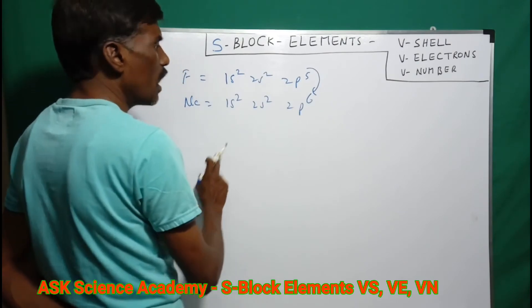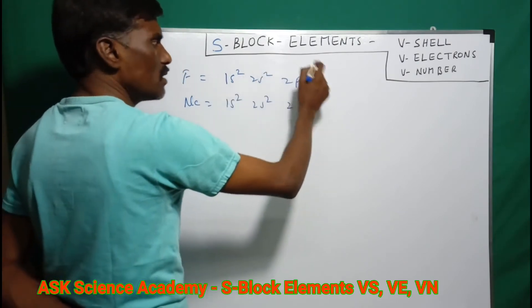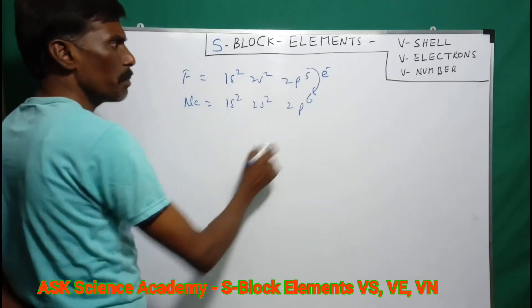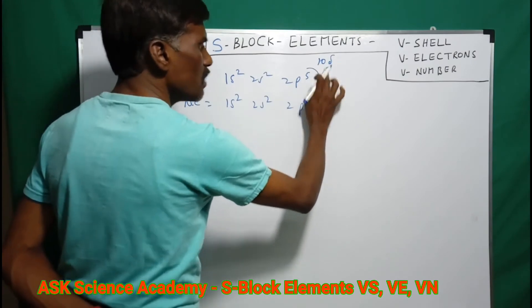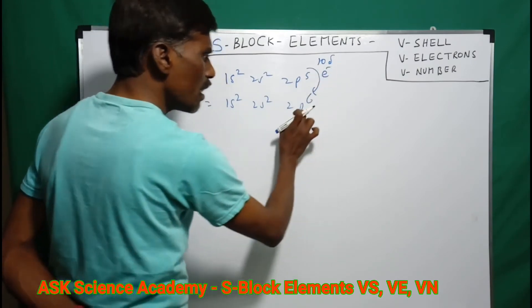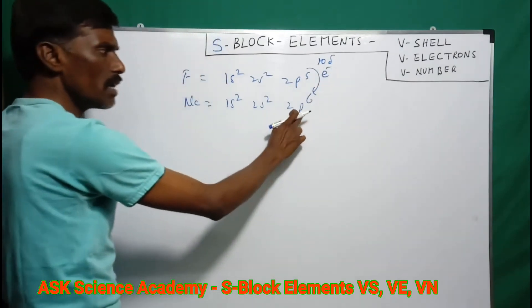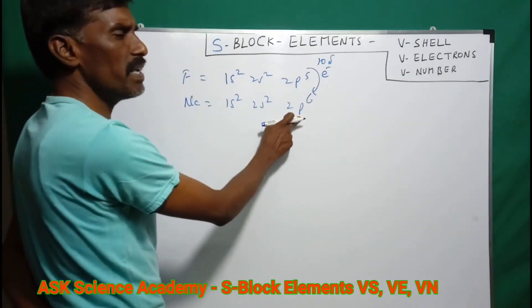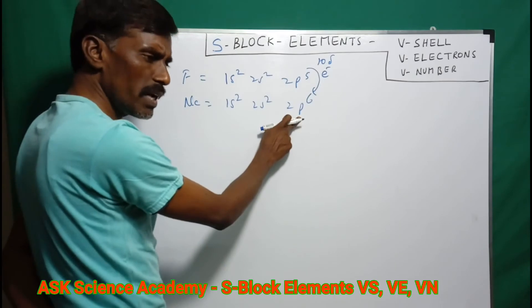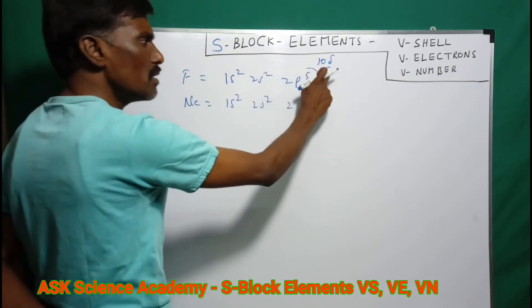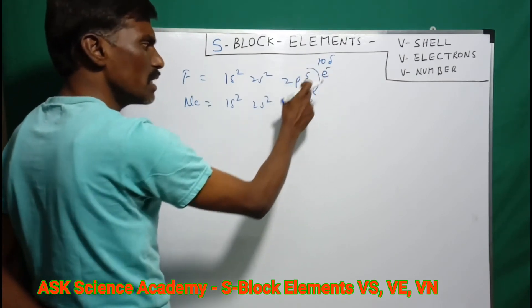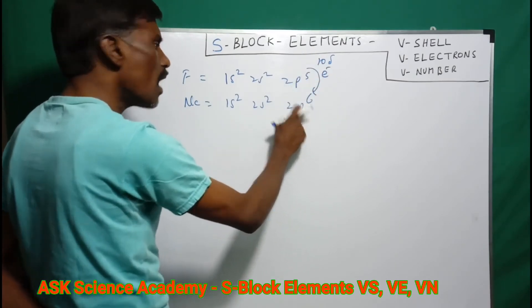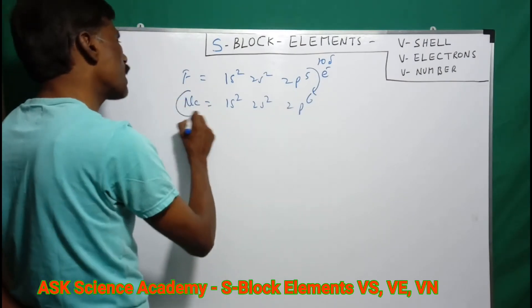You have 10 electrons. This 10th electron is in the s-orbital. Because the 10th electron is in the s-orbital, this is an S-block element.